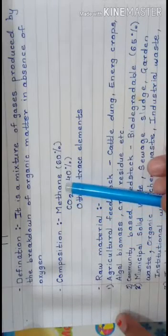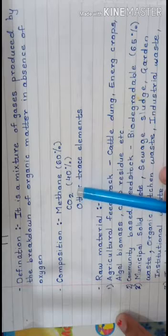The biogas mainly contains methane, that is about 60%, CO2 40%, and other trace elements.